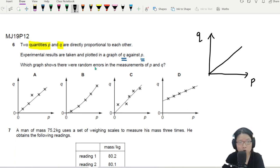Which graph shows random errors in the measurement of P and Q? So if there is random error, it means that the plots are either above and below the point. So this graph, this black color graph, or this one, is true value. The true graph that we want to see.